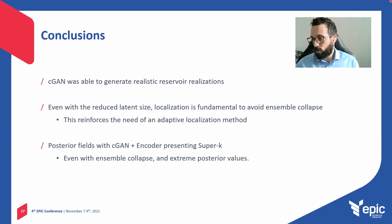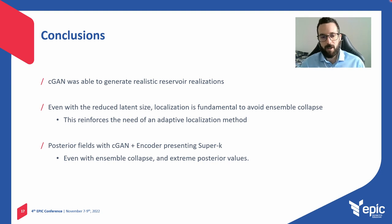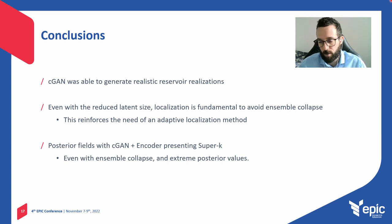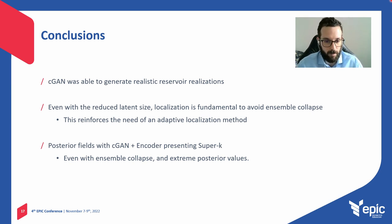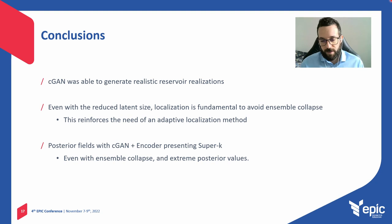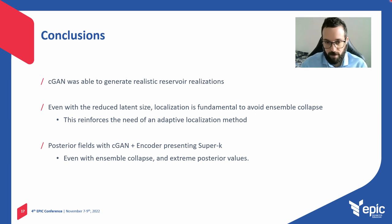What are the conclusions? The conditional GAN was able to generate realistic reservoir realizations. Even with a reduced latent size, localization is fundamental to avoid ensemble collapse — we observed ensemble collapse even when doing assimilation in the latent space. This reinforced the need for an adaptive localization method, because in this case we cannot apply a distance-based method. Posterior fields with the conditional GAN plus the encoder present super-K features even with collapse and abnormal posterior values. This is interesting.